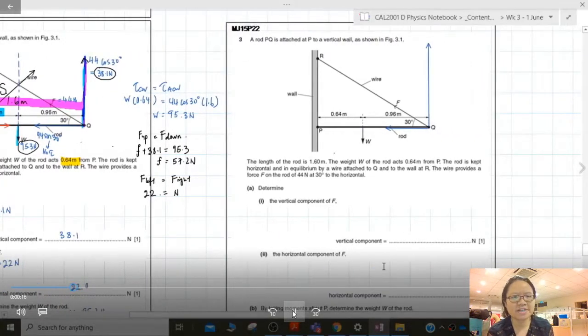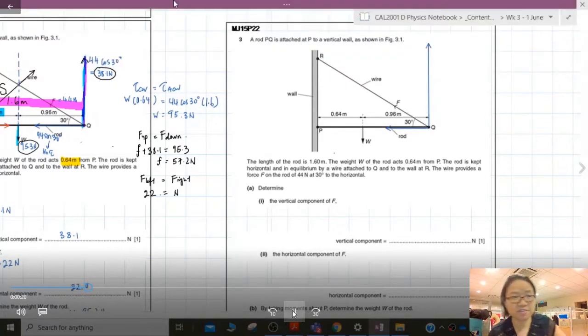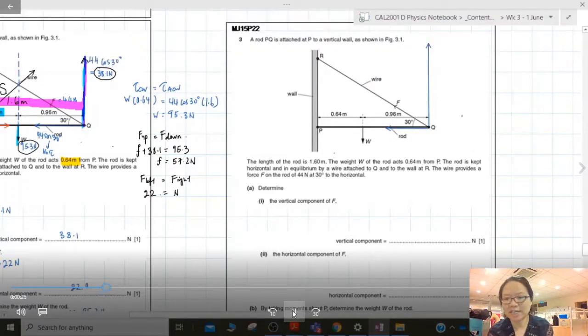So this is the mistake. If you notice, the mistake is because when I resolve the vector, the vertical component should have been 44 sine, because the vertical component has the angle. So this is 44 newton, this should be 44 sine, not 44 cos.